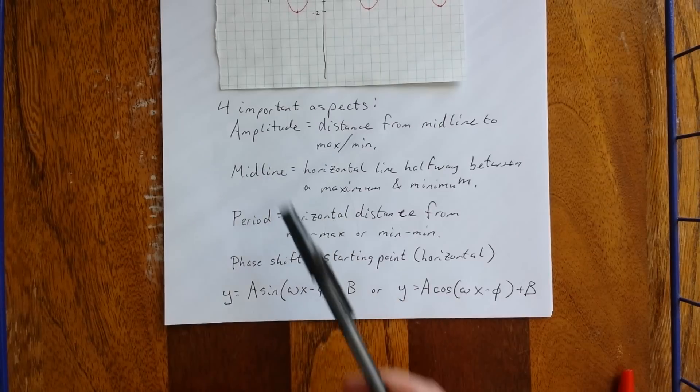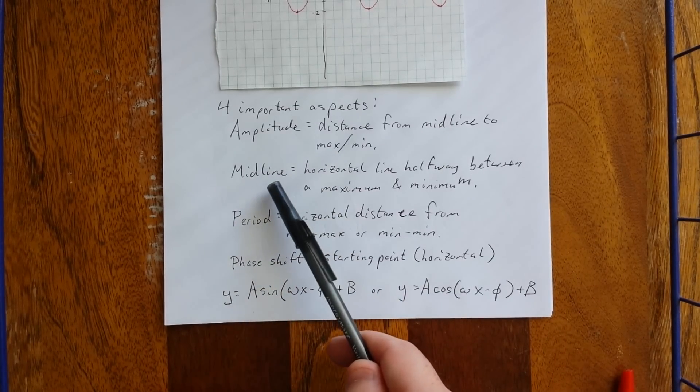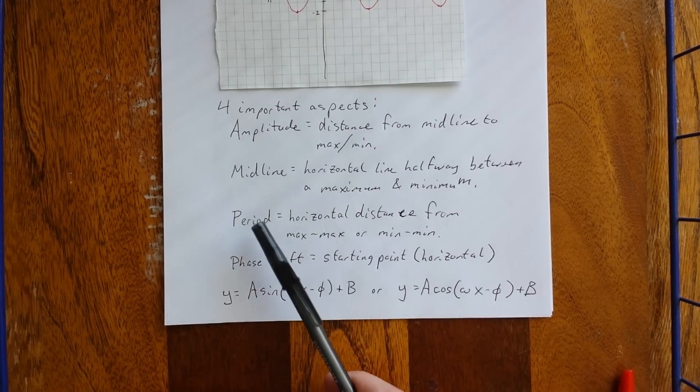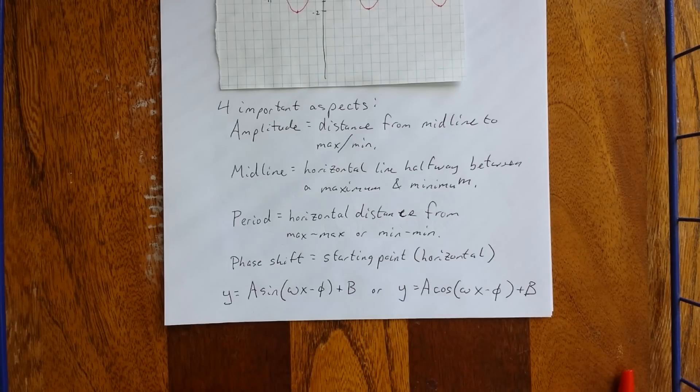The amplitude is going to impact the value of a. The midline impacts the value of b. The period impacts the value of omega. And the phase shift is going to impact the value of phi.